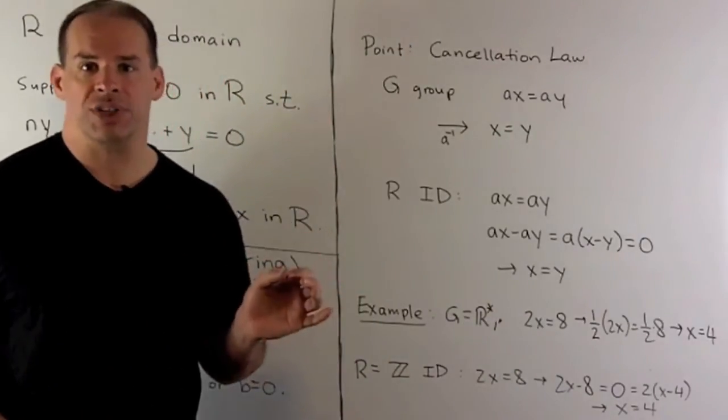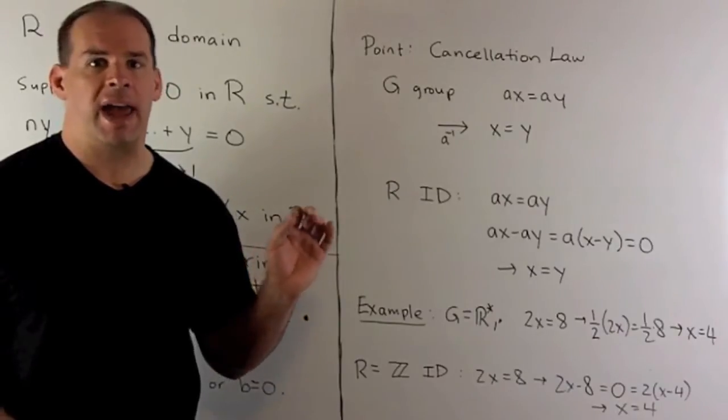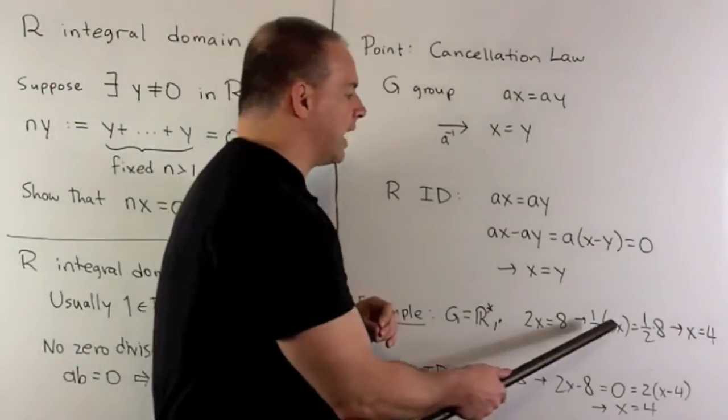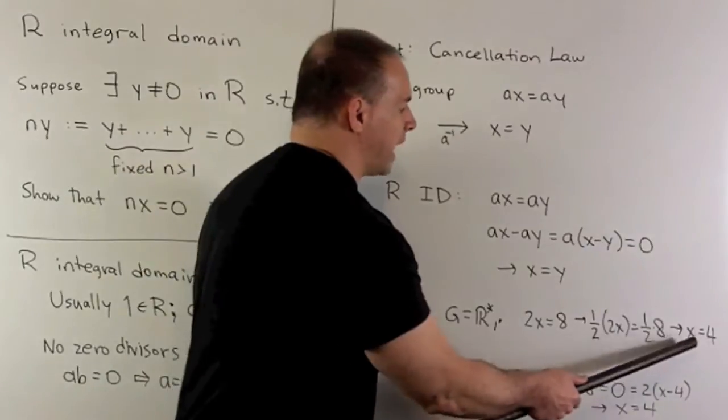Here we have multiplicative inverses. So I'll just multiply both sides by a half. That'll take out the two, and then I'm going to be left with x equals four.